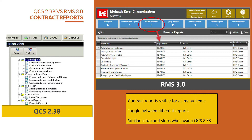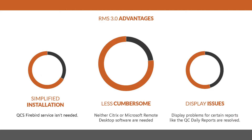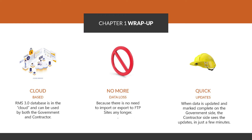Let's quickly recap some of the advantages of the RMS 3.0 platform. The installation is simple and the QCS Firebird service is no longer needed. There is no more need for Citrix or Microsoft Remote Desktop software. You do not need to have multiple QCS programs depending on the USACE district. RMS functions across the board on any contract. There is no import-export function, and since the RMS database is in the cloud, data is saved automatically once entered.